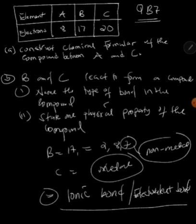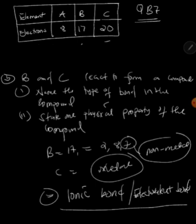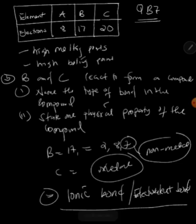So that's the ionic bonding. A bond between metal and non-metal. We call it ionic bonding. Then it says state one physical property of the compound. One of these, of ionic compounds, is that they have high melting points. That's a physical property. They have high boiling points. They are crystalline in nature. They conduct electricity only in a molten state.